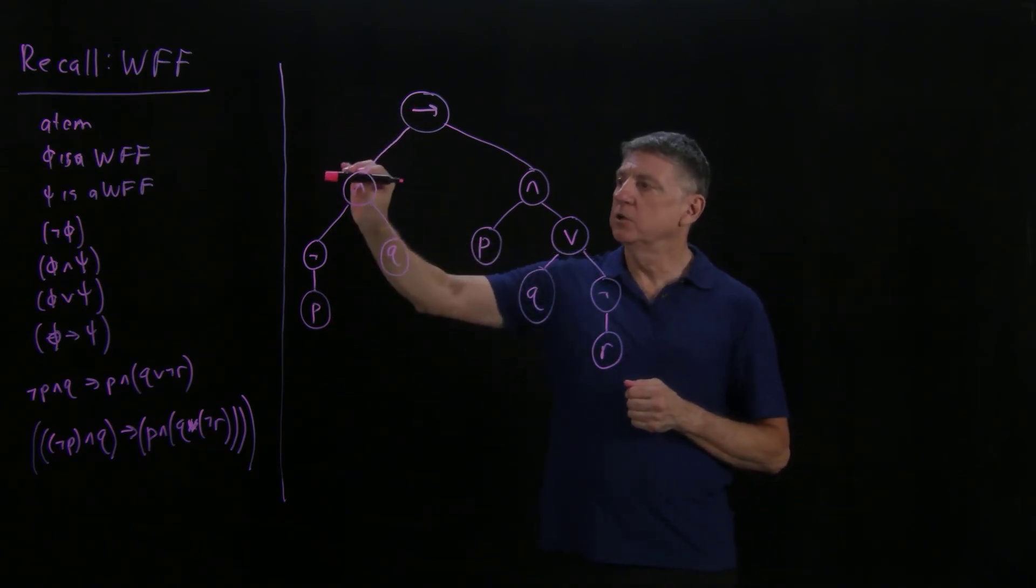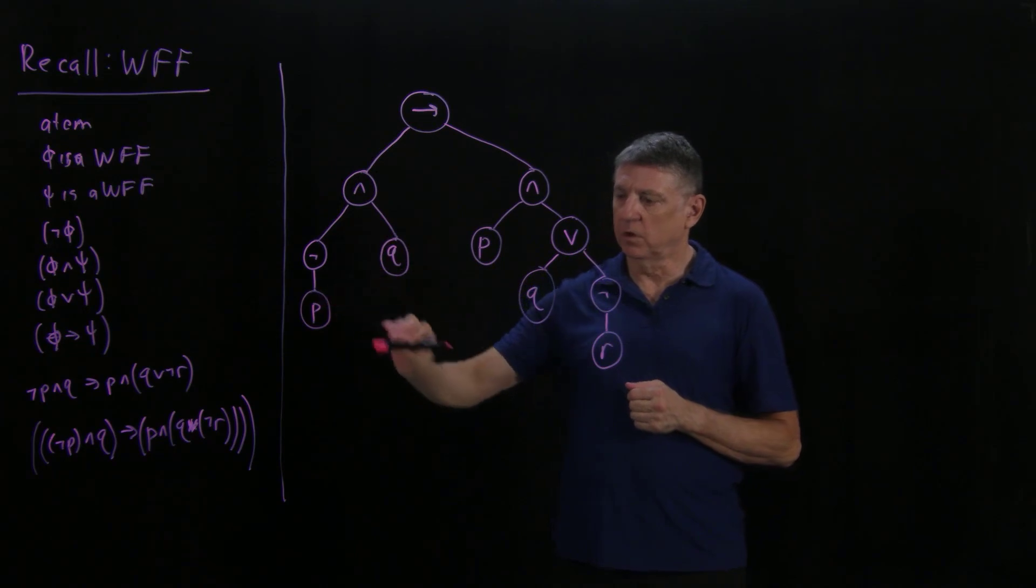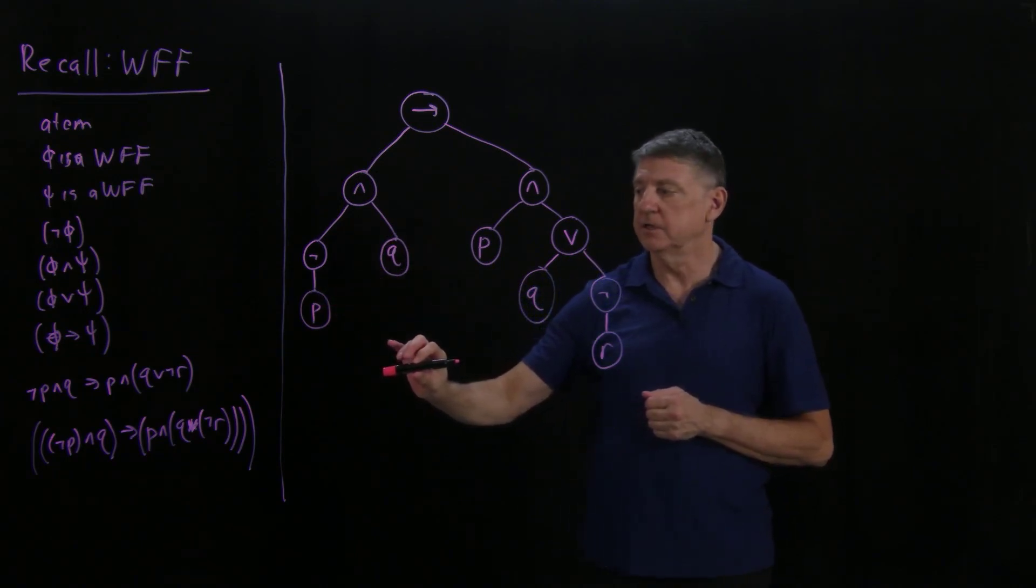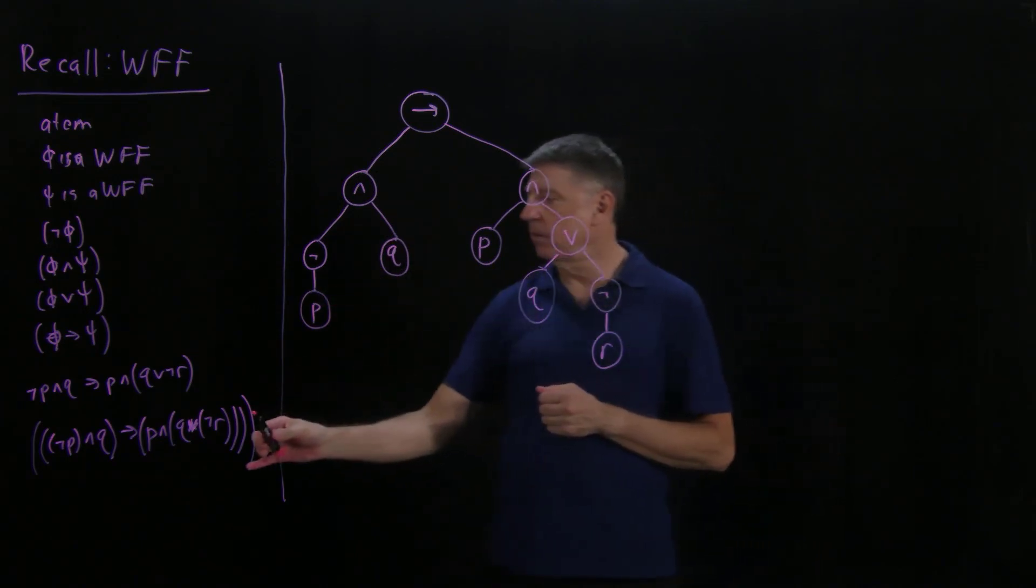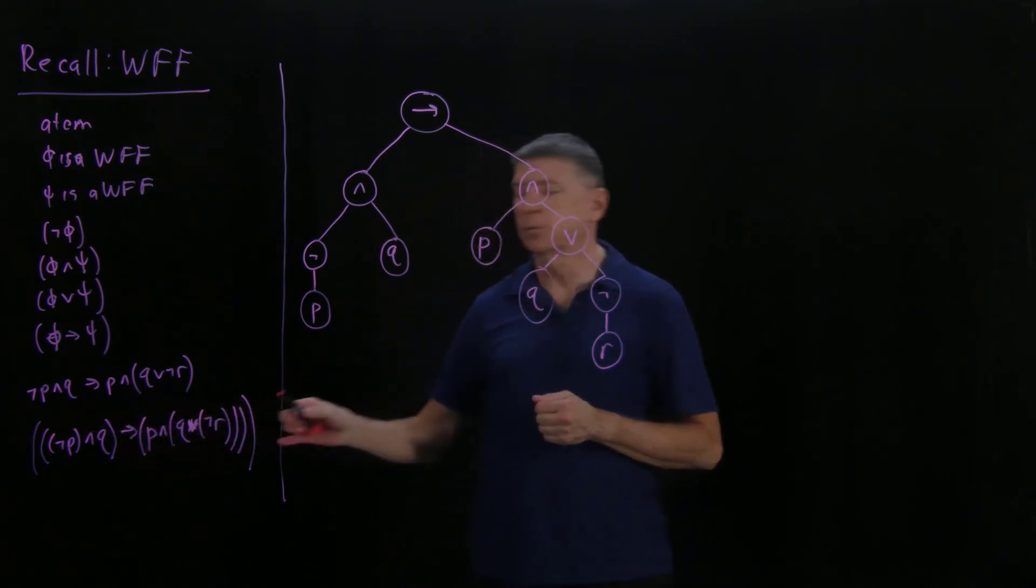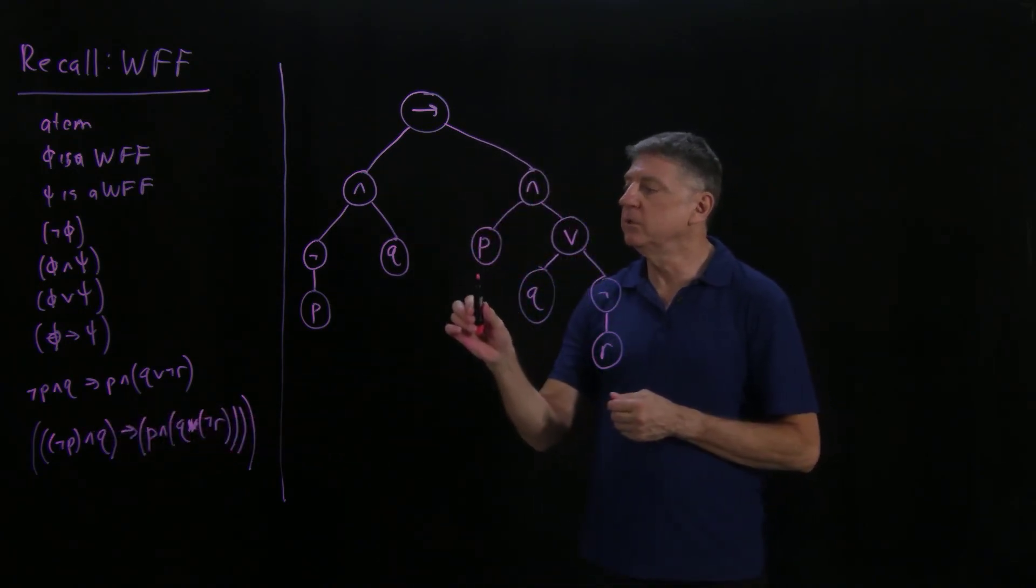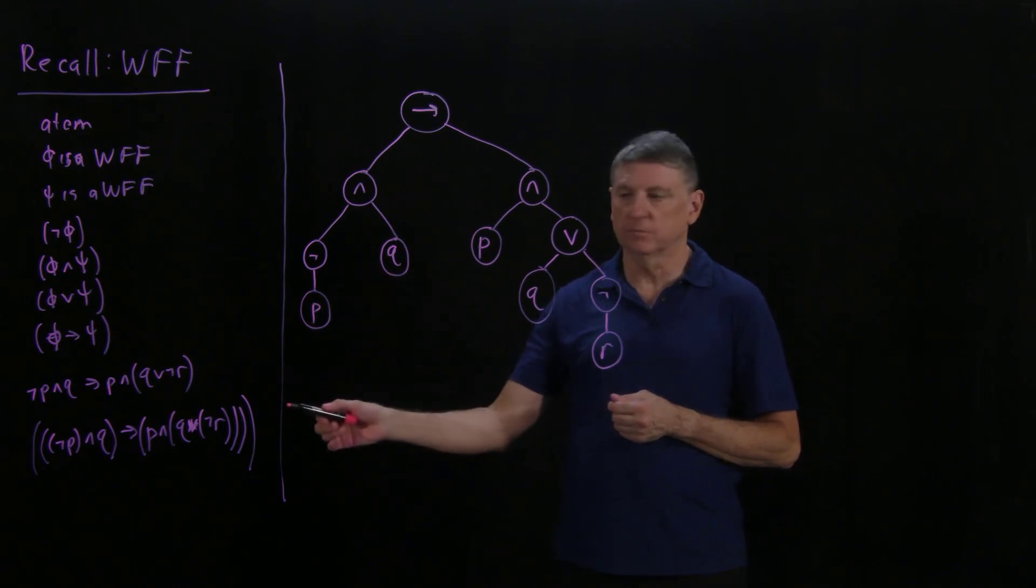For example, we can say that there is one, two, three, four, there are five levels to this parse tree. It may not be immediately apparent from this formula how many levels there are. So we can go between parse trees and well-formed formulas.